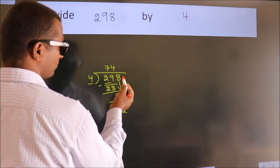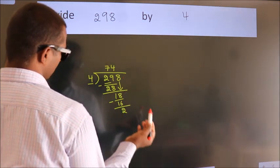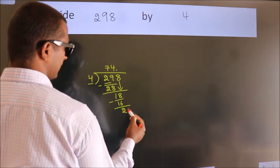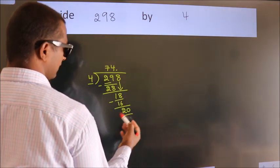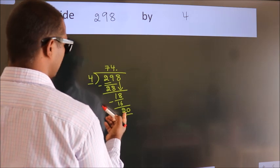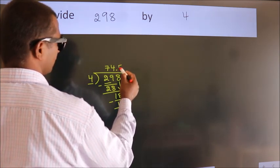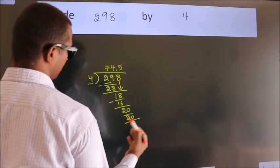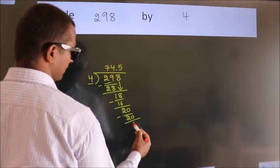After this, no more numbers to bring down. So what we do is put a dot and take 0, making 20. When do we get 20? In the 4 table, 4 times 5 equals 20. Now we subtract. We get 0.